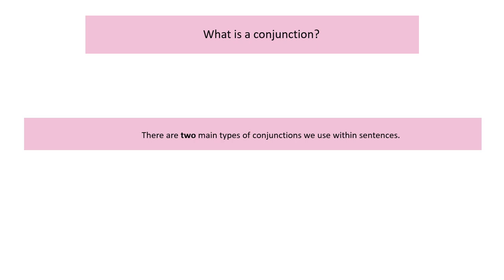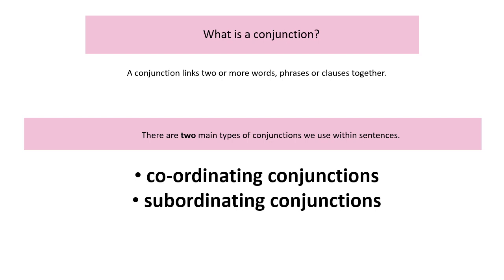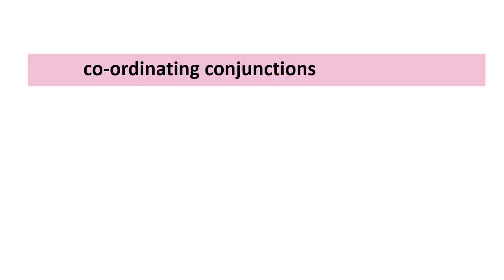Hello and welcome to this lesson on conjunctions. Today we're going to look at the two different main types of conjunctions. First of all, what is a conjunction? A conjunction links two or more words, phrases, or clauses together. There are two main types of conjunctions: coordinating conjunctions and subordinate conjunctions.